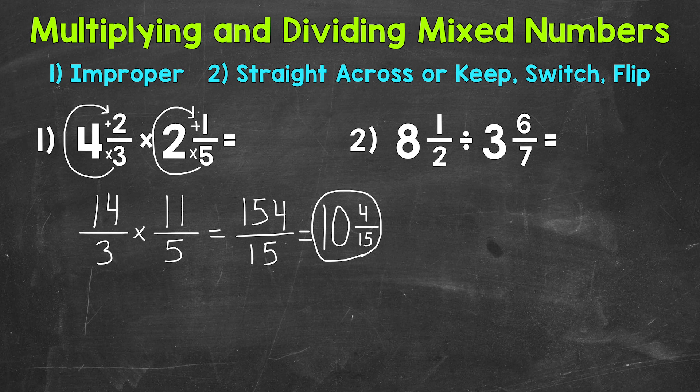So to recap, convert to improper fractions, and then we can multiply straight across.